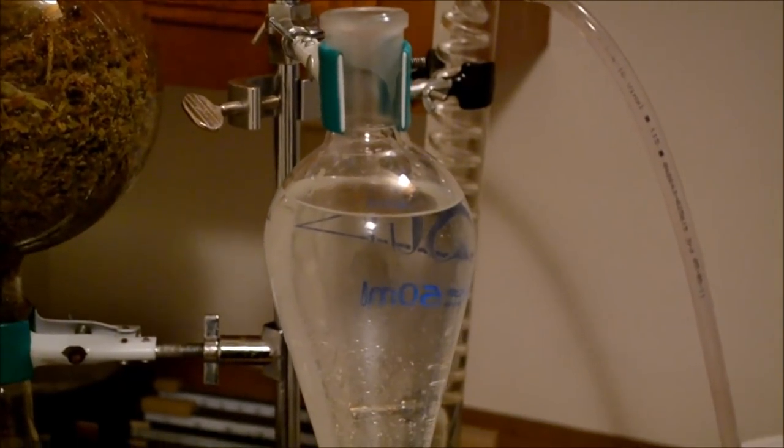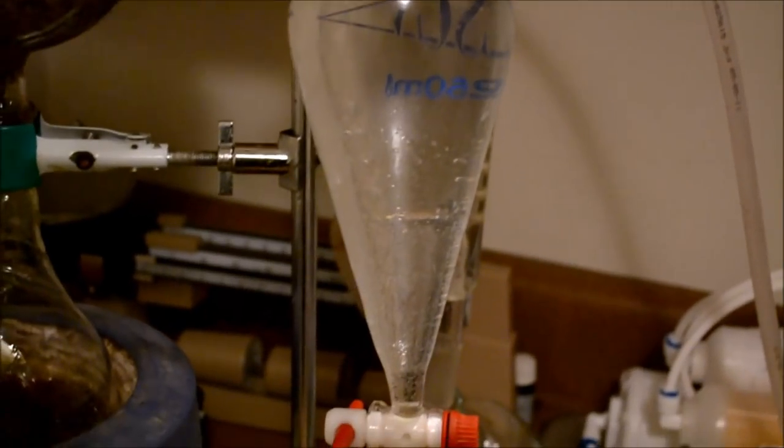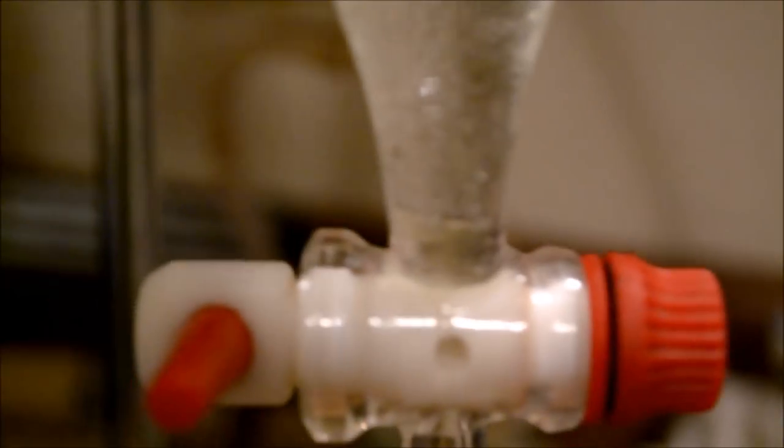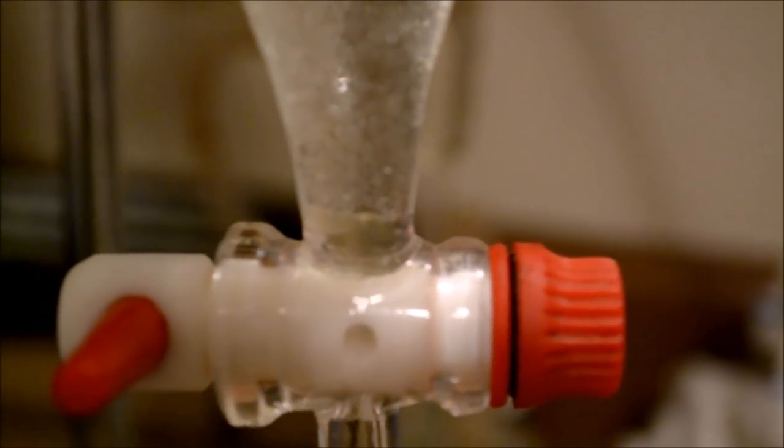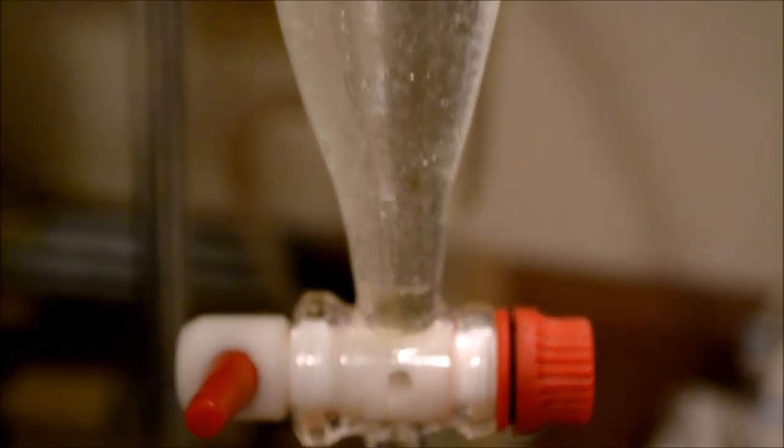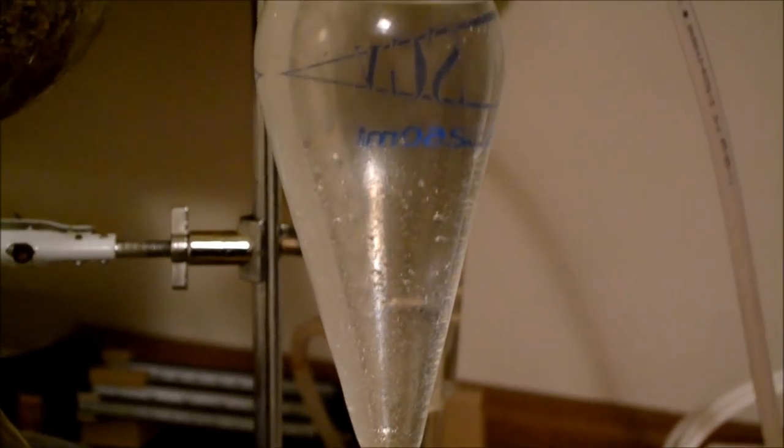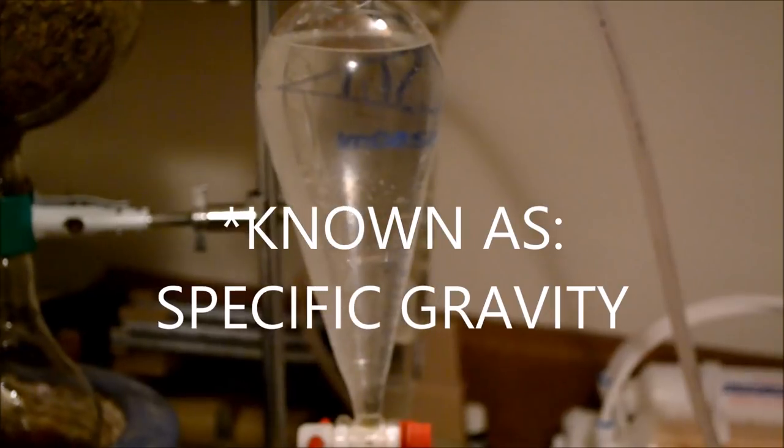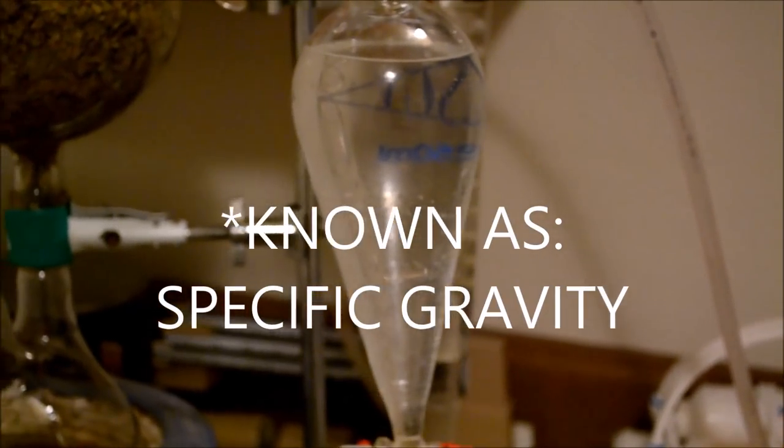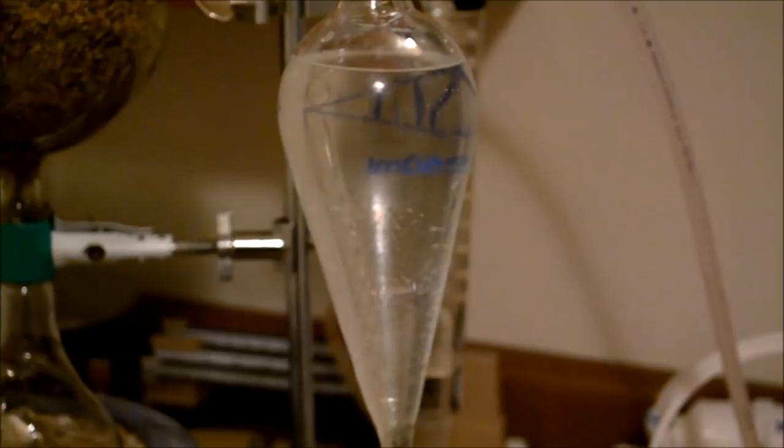So I just filled up the separatory funnel with the hydrosol and essential oil. Here you can see that more yellow liquid at the bottom. That is the essential oil, and it's actually pretty interesting. Catnip oil is heavier than water, so it sinks to the bottom. It's one of two oils I've distilled that's done that.